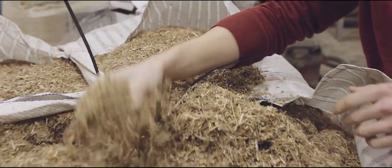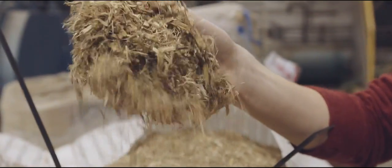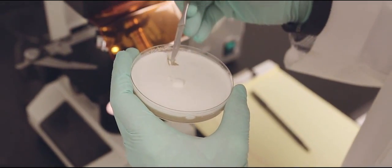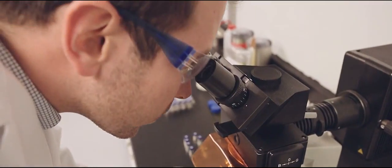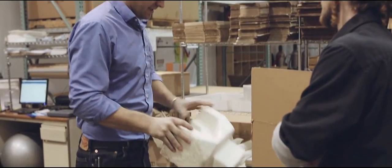Ecovative's process starts with agricultural by-products like corn stalks and the root structure of mushrooms, called mycelium. The mycelium branches out to form a matrix around the agricultural waste, resulting in a solid, strong mass.